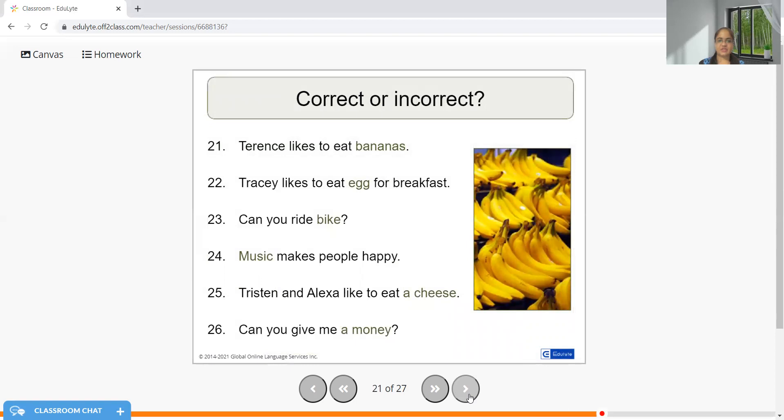Let's check the correct or incorrect sentences. Terrence likes to eat bananas, correct. Tracy likes to eat egg for breakfast; it should be eggs. Can you ride a bike? Okay. Music makes people happy, absolutely correct. Tristan and Alexa like to eat cheese, and not A cheese. Had there been cubes of cheese, that would be a different story, but with cheese it is considered uncountable, so no article.